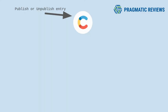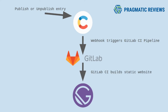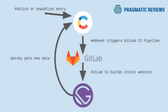Every time someone publishes new content or removes existing content from the CMS, a webhook is going to be executed by calling an endpoint in GitLab that is going to trigger a GitLab CI pipeline. GitLab CI is going to build our static website in Gatsby, and our Gatsby application is going to get the content changes from the Contentful Delivery API.